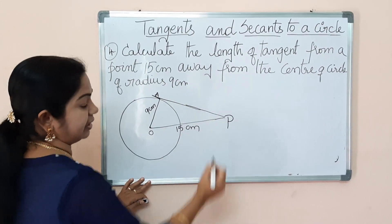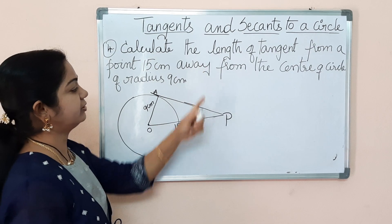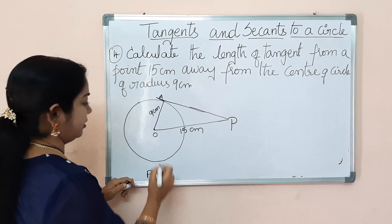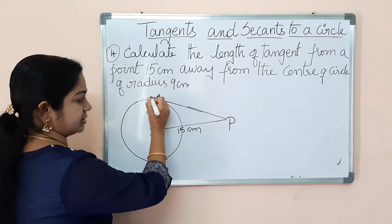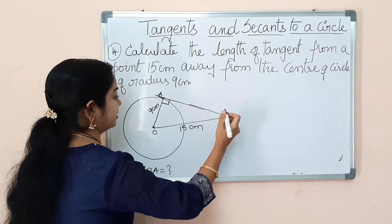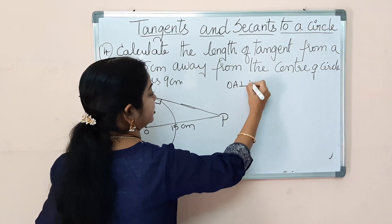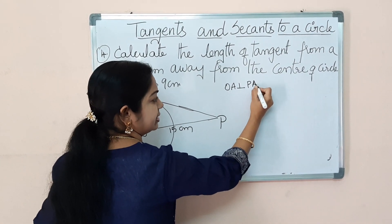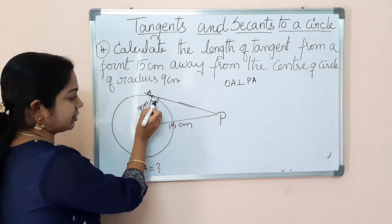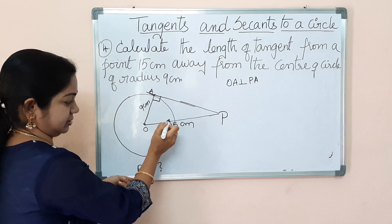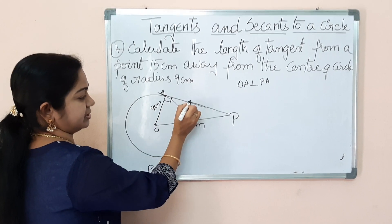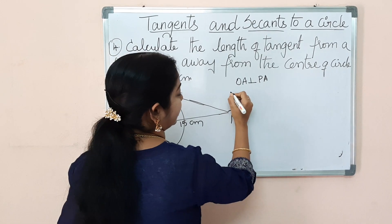Let the external point be P. This is 15 centimeters away from the center O of the circle with radius 9 centimeters. So PA is the tangent. We have to find the length of PA. According to the lemma, the radius is always perpendicular to the tangent at the point of contact, so OA is perpendicular to PA. Looking at this triangle, it is a right-angled triangle. The hypotenuse is 15 centimeters, the base is 9 centimeters, and we need to find the other side. So we apply the Pythagoras theorem.